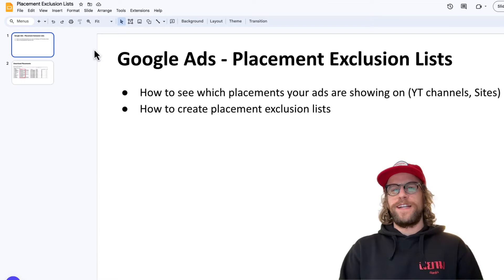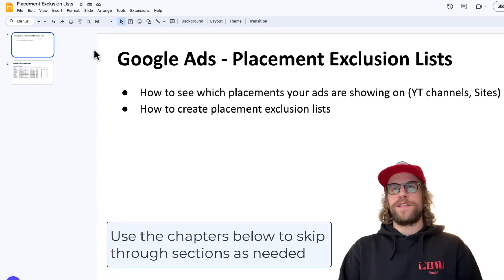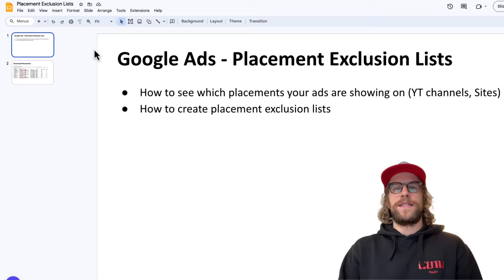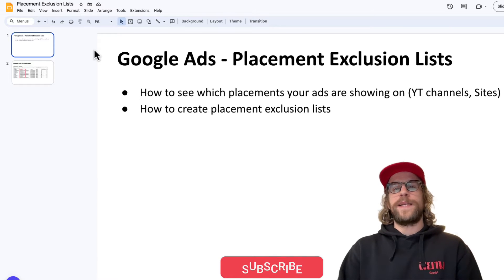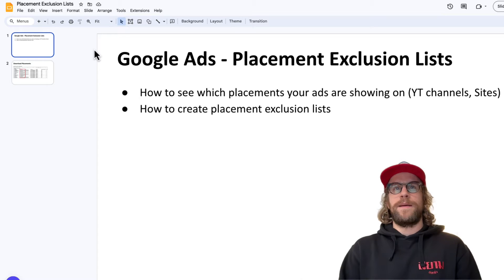Hey everyone, Mitchell Gould here. In today's video we're going to be creating placement exclusion lists in our Google Ads campaigns. This is going to be for YouTube and display campaigns — we're going to associate the exclusion list to those two types of campaigns. In a future video I'll show you how to make placement exclusions for PMax campaigns, but this is going to be for video and display campaigns.